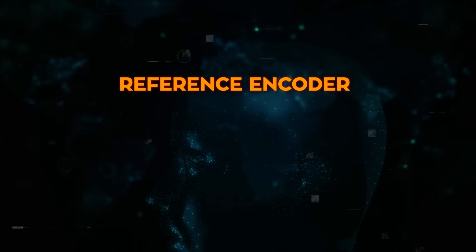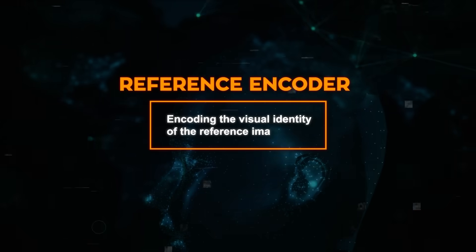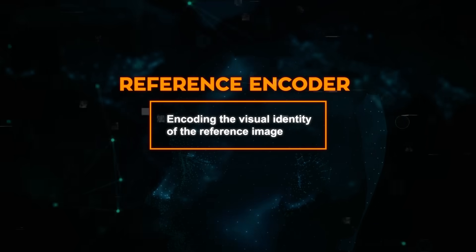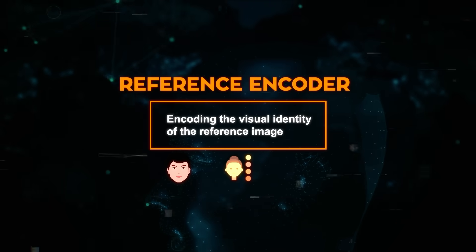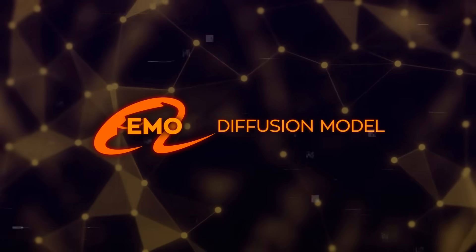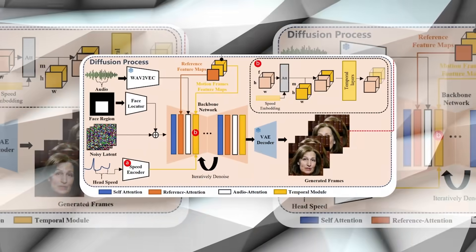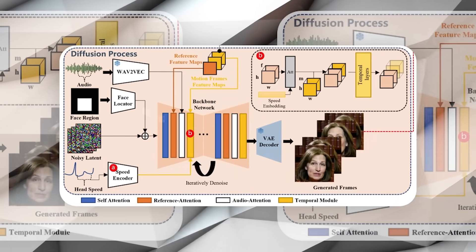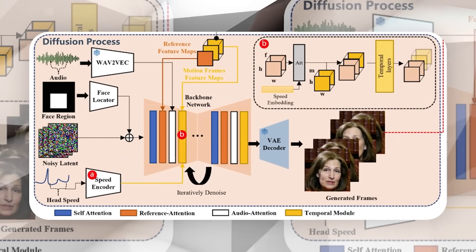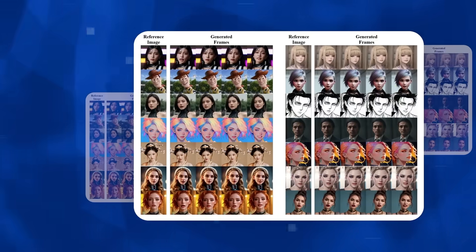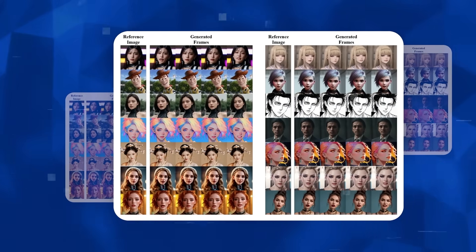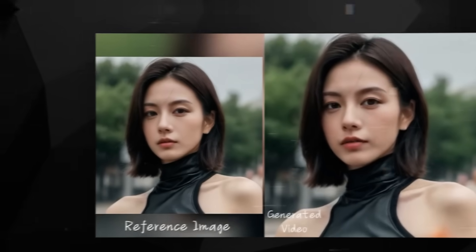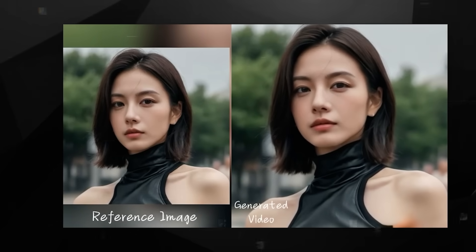Following this, the reference encoder comes into play, encoding the visual identity of the reference image, including aspects like face shape, skin tone, and hairstyle. This ensures that the character's appearance is consistently maintained throughout the video. The core of Emo is the diffusion model, a pivotal module that synthesizes video frames from the audio and reference features through a reverse diffusion process. This model, having been trained on a vast dataset of talking head videos, is adept at creating realistic and expressive facial motions.